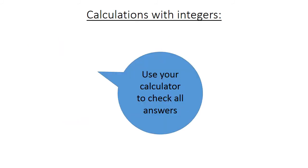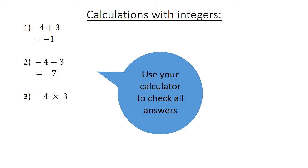Use your calculator to check all answers. Negative 4 plus 3 equals negative 1. Negative 4 minus 3 equals negative 7. Negative 4 times 3 equals negative 12. Negative 4 times negative 3 equals 12.